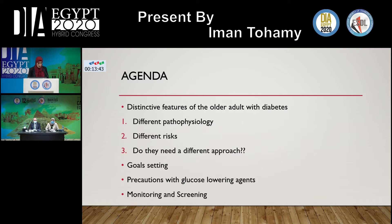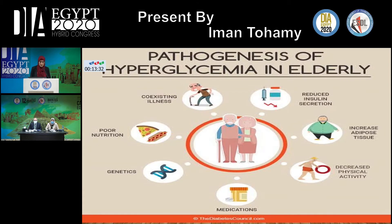We can say that elderly with diabetes have distinctive features with different pathophysiology, different risks, and they do need a different approach. This slide shows the pathogenesis and factors interacting in the pathogenesis of hyperglycemia in the elderly. Hyperglycemia could be considered as an age-related disorder.